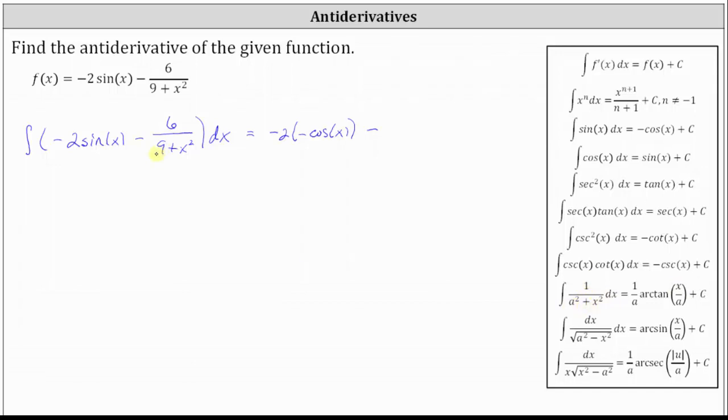It might be helpful to rewrite six divided by the quantity nine plus x squared as six times one divided by nine is equal to the square of three plus x squared. So notice in this form, we can see that a is equal to three.